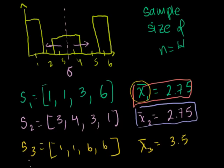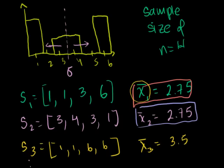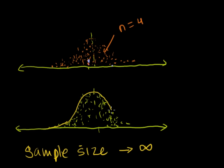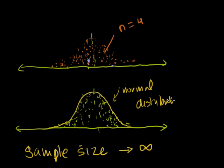And that's frankly why the normal distribution shows up so much in statistics, and why it's a very good approximation for the sum or the means of a lot of processes. What I'm going to show you in the next video is that this is a reality — as you increase your sample size, as you increase your n, and take a lot of sample means, you're going to have a frequency plot that looks very, very close to a normal distribution.